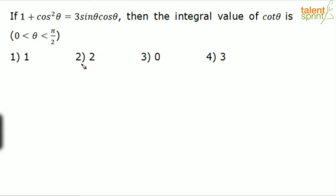The options are 1, 2, 0, or 3. And one more hint given to us is that theta lies between 0 and pi by 2, that is, theta is between 0 and 90 degrees. So one way to solve this question is to try and find out what the value of theta is.